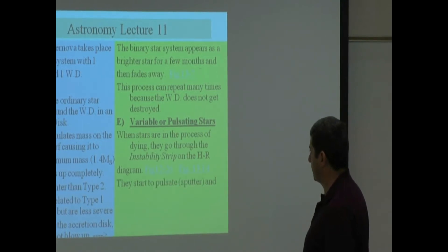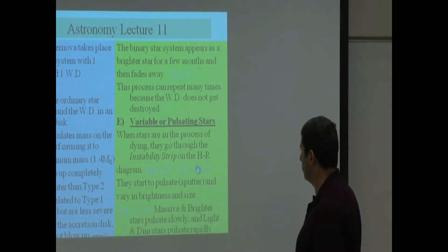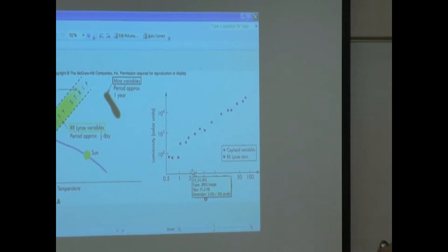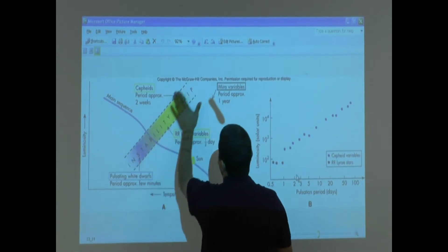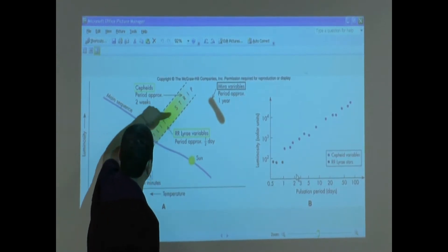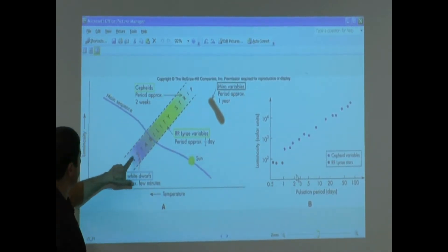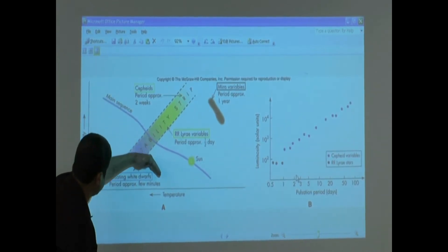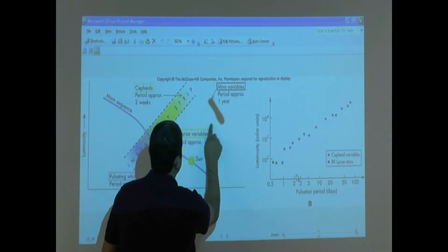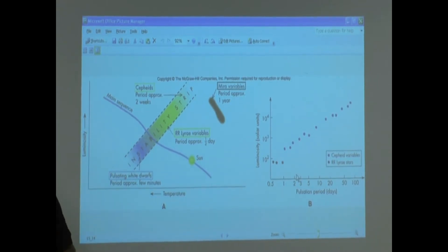They start to pulsate or sputter and vary in brightness and size. The instability strip is an invisible region of the HR diagram. When the star is dying, if it goes through the lower portion it's called an RR Lyrae variable; through the top portion, a Cepheid variable. As a star is on its way to becoming a white dwarf, the white dwarf itself pulsates. Some stars go through another region — they're called Mira variables.